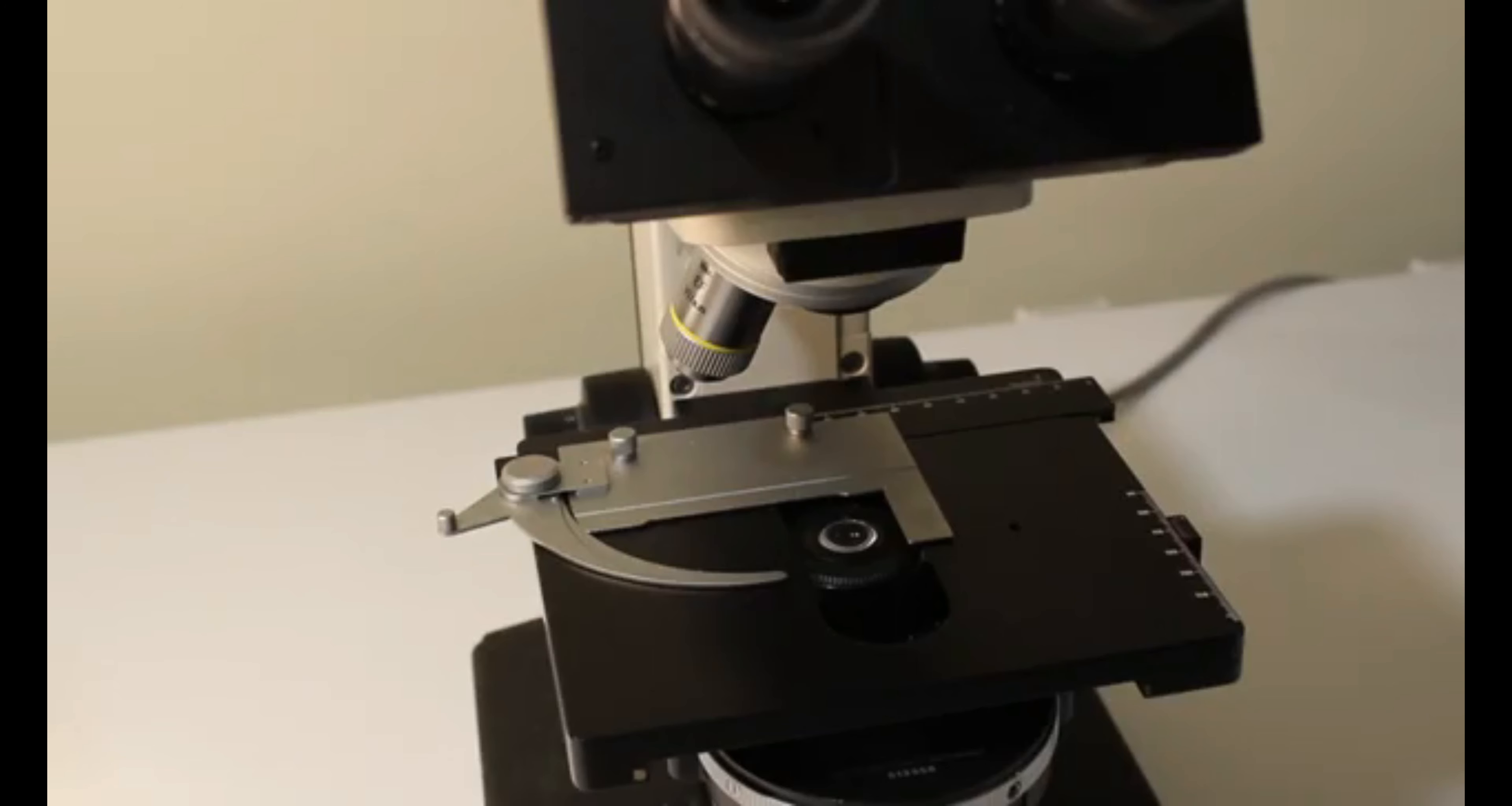In this episode we're going to talk about how to focus on your sample and switch between magnifications. For this video I'm going to assume that you've already aligned your condenser properly. This is a topic I'm going to cover later in the series in episode 5.